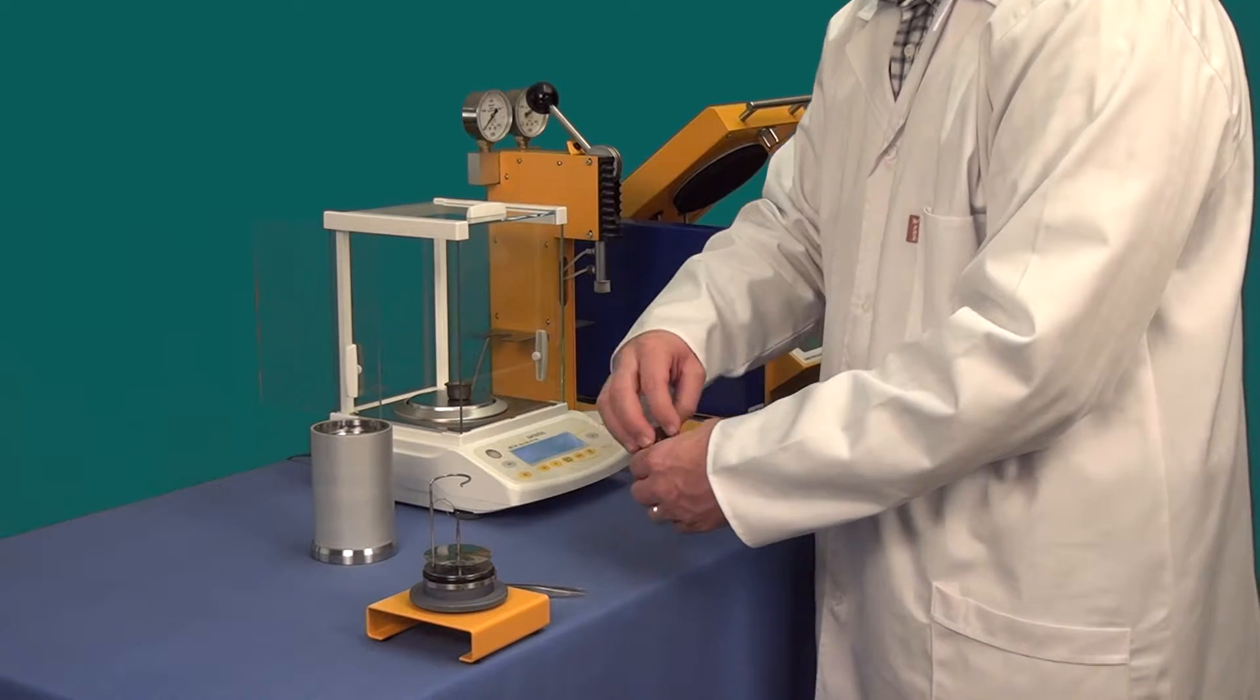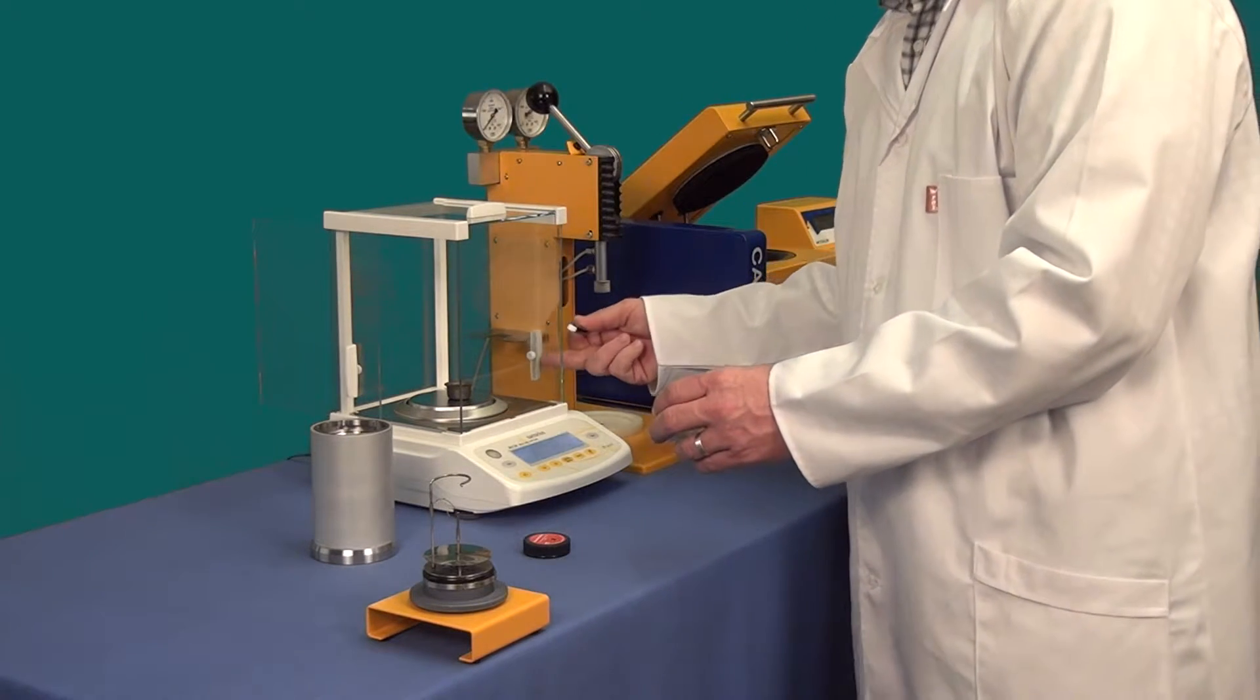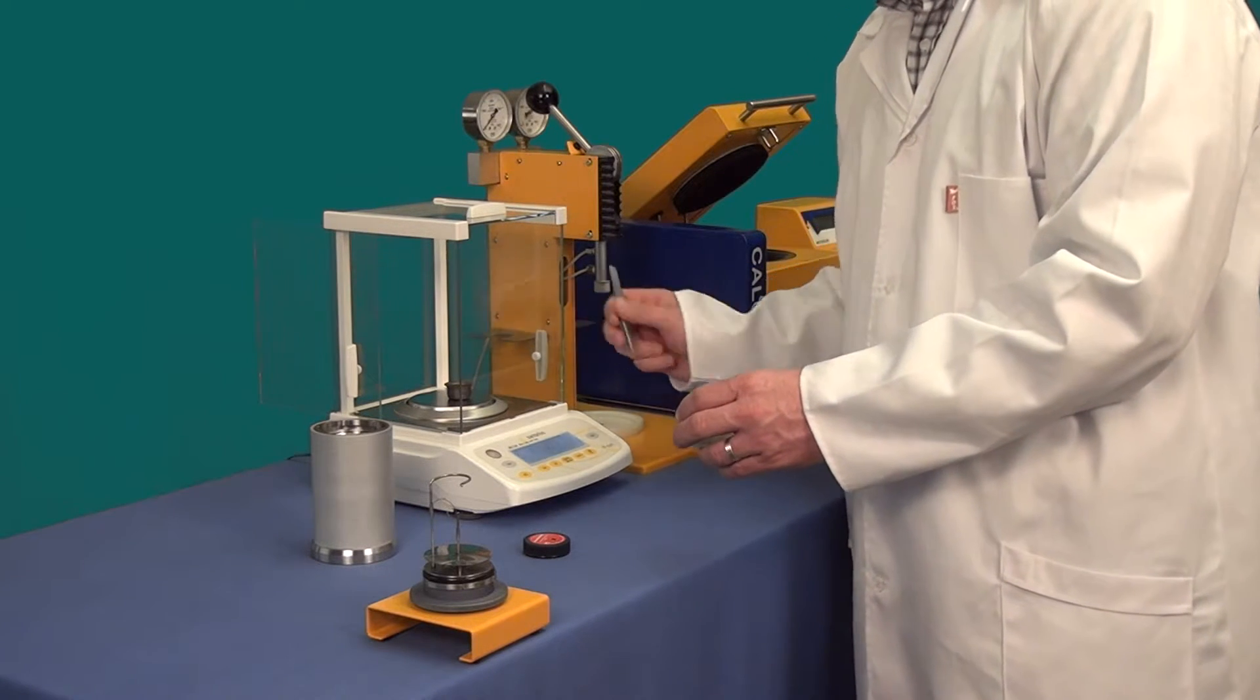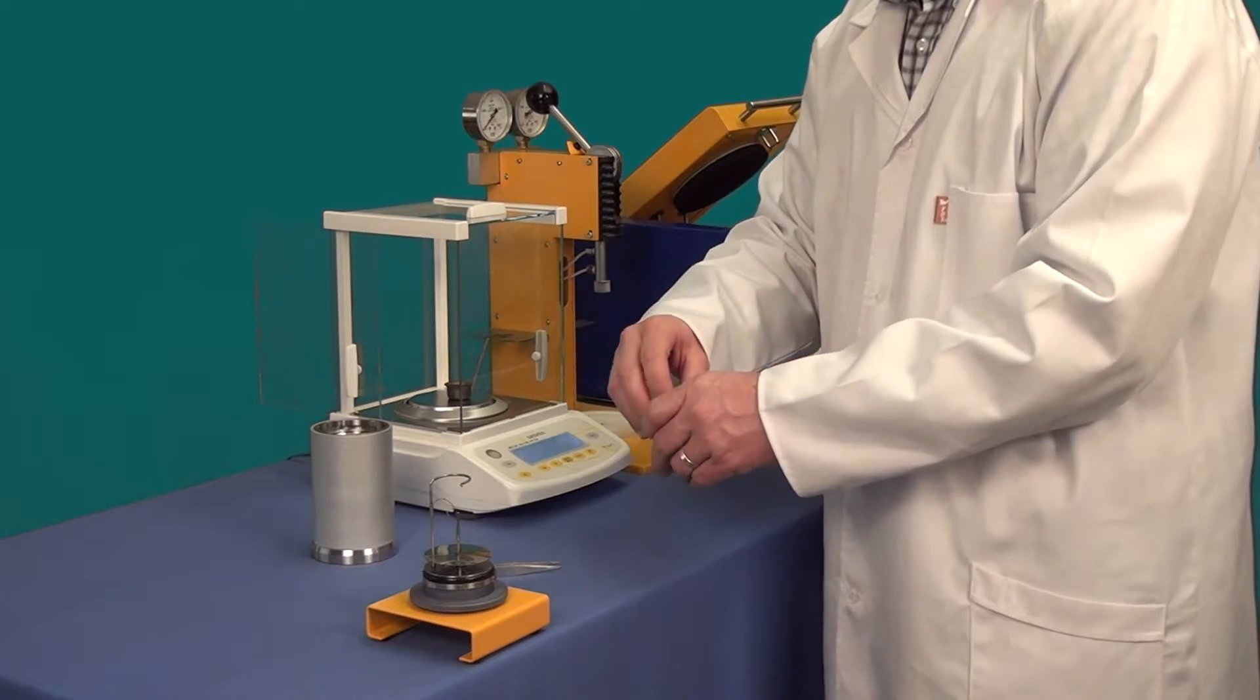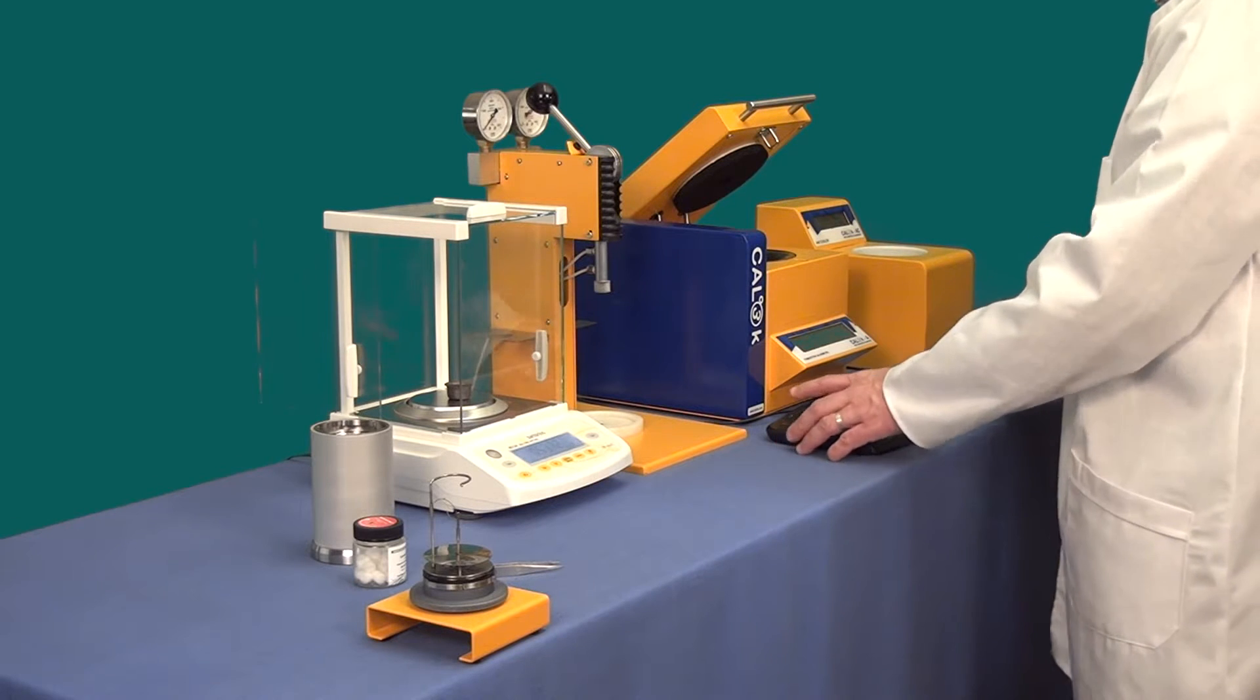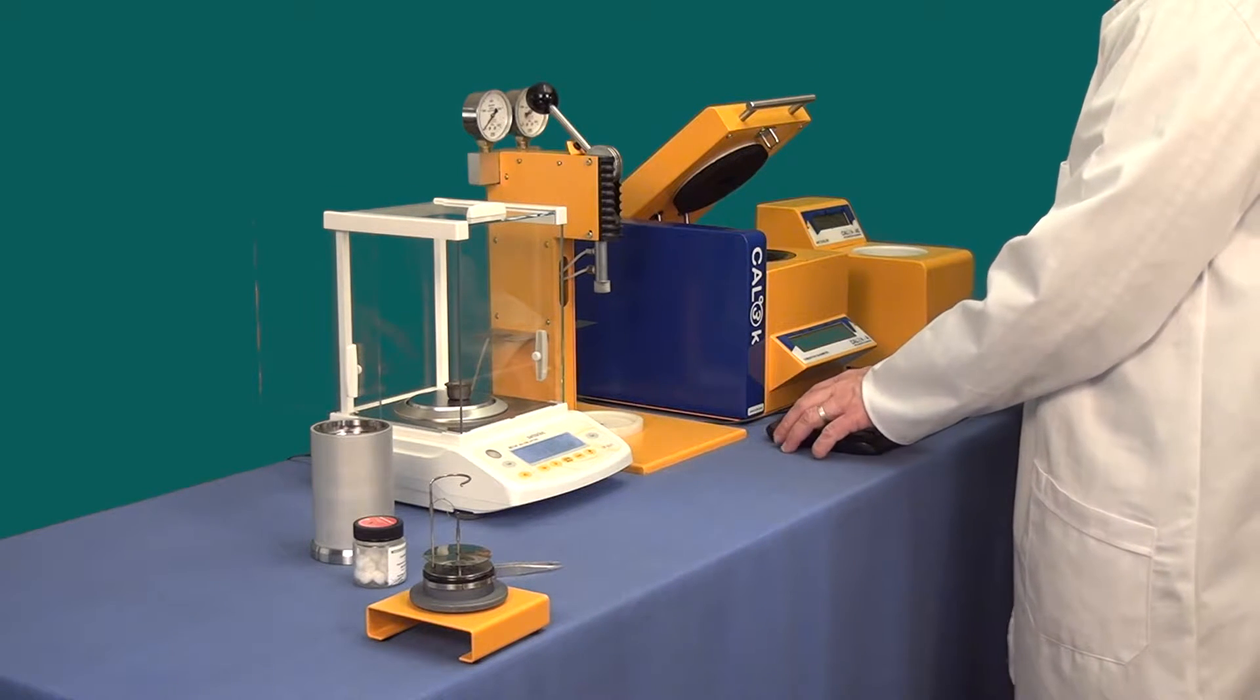Next we place a benzoic acid tablet of approximately half a gram into the crucible. Once the balance has stabilized we type in the mass into the calorimeter. The calorimeter does have the option of transferring the mass automatically from the balance.